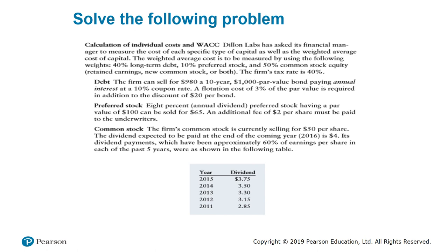For the cost of preferred stock: an 8% annual dividend preferred stock with par value of $100 can be sold for $65, with an additional underwriter fee of $2 per share. Dividends equal 8% times $100, so dividends equal $8. Net proceeds equal the selling price of $65 minus $2, giving net proceeds of $63. The cost of preferred stock equals dividends over net proceeds.